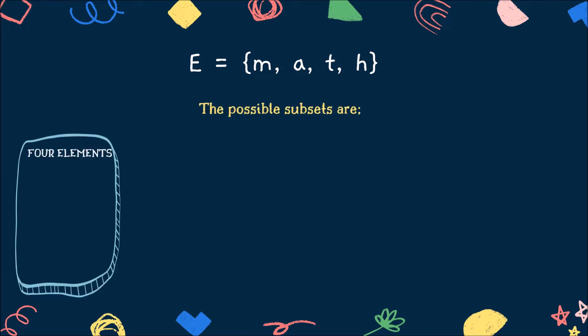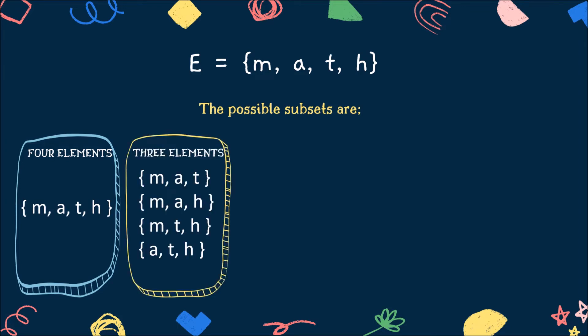Now, let's have another example. Set E is the set of letters in the word math. The possible subsets are, for four elements, the subset is the set itself. For the three elements, the subsets are mat, subset ma h, m t h, and subset a t h.